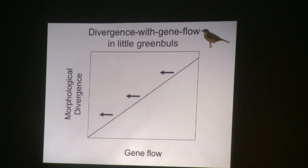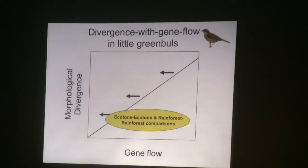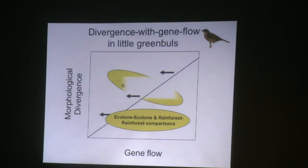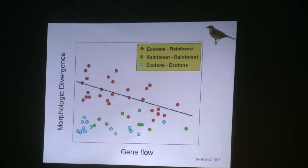Instead of using divergent selection directly, we used morphological divergence as an index because the traits we were working on were closely correlated with fitness. We had two expectations: within-habitat comparisons — ecotone-ecotone and forest-forest — should show relatively little morphological divergence across a range of gene flow. Ecotone-forest comparisons should sit above this, showing the driving effect of ecology on these traits. We applied microsatellites, measured gene flow, looked at morphological divergence, and the pattern seemed to fit the divergence with gene flow model of speciation.